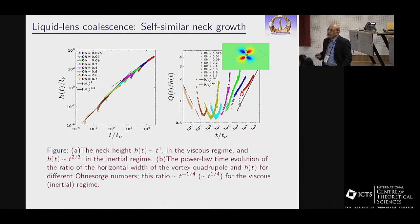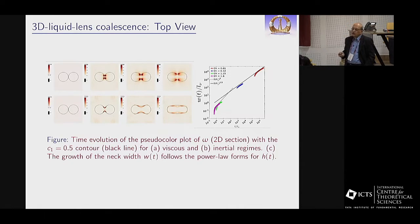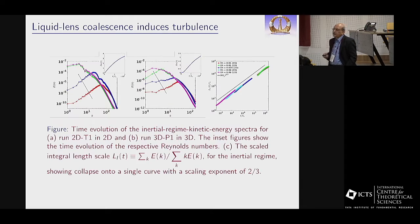You can plot the height suitably scaled versus time and look at the two asymptotes: t^(2/3) here, t^1 here. You see such plots in experiments. People so far have not emphasized the importance of this quadrupole, so here is the width of this quadrupole and how it behaves with these nice asymptotes in these regimes. You can also look at various spectra to see that in this inertial range you see an energy spectrum in turbulence spread over many decades of wave number, so this lens merger is generating turbulence too.